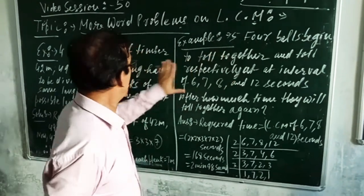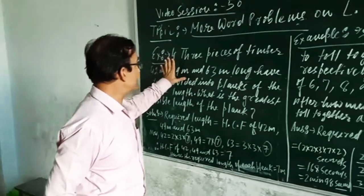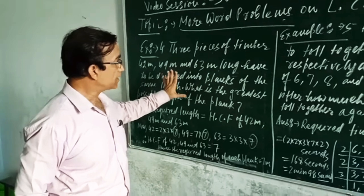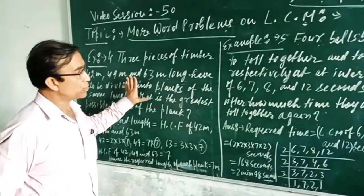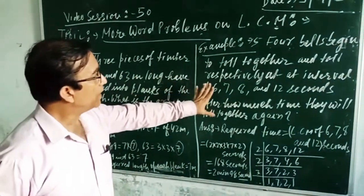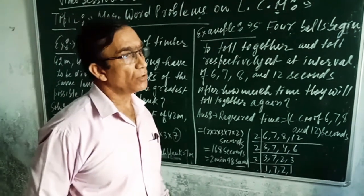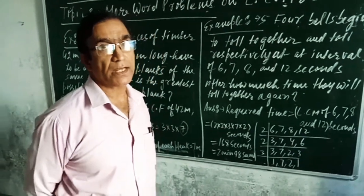So this portion is based on LCM and the first portion, example number 4, was based on HCF. These two portions are based on LCM and HCF of 3 or more numbers. Okay girls, thank you.